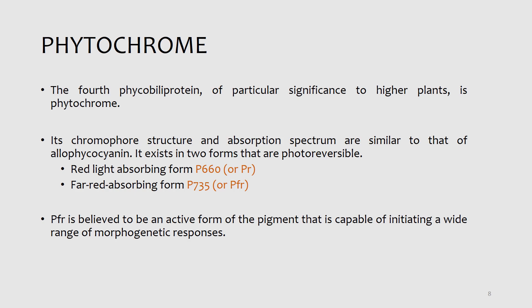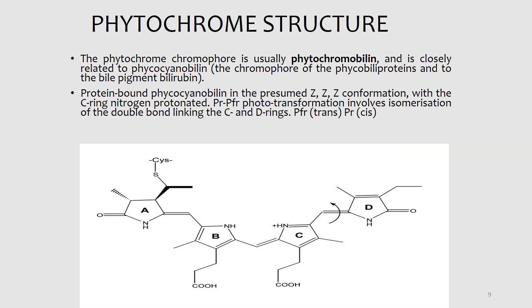This is the photoreversibility of phytochrome. PFR is also believed to be the active form of the pigment and is capable of initiating a wide range of photomorphogenetic responses. We will study this in detail in semester 7, Plant Physiology 2, where there is a whole chapter related to phytochrome covering its structure, genetic basis, and functions. If you look at the phytochrome structure, the chromophore is usually the phytochrome bilin, and the four rings we see in the phytochrome are associated with the phytochrome bilin.